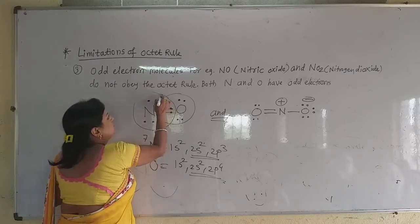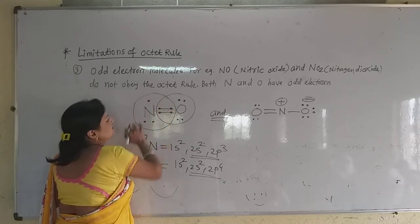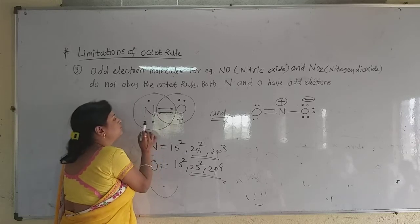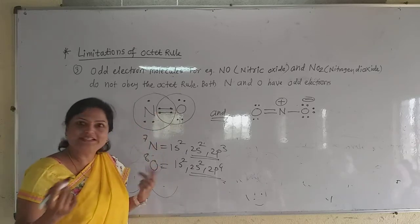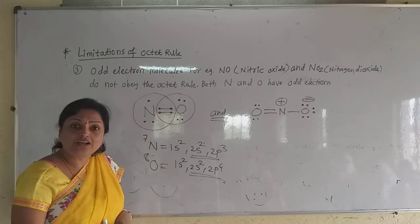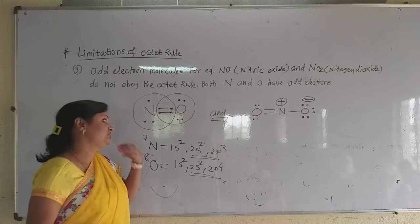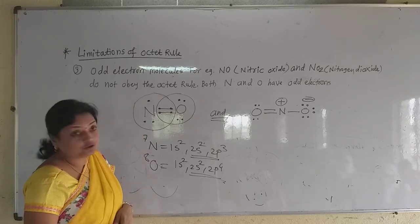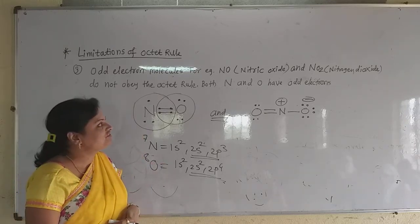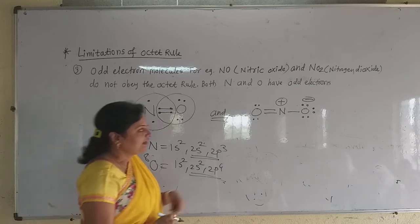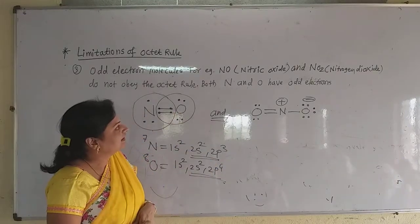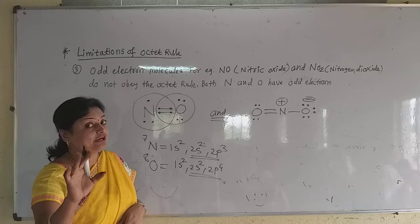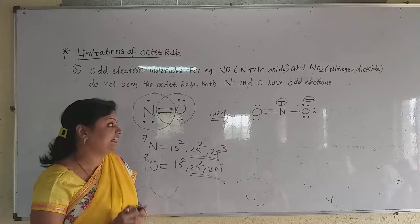But what about the nitrogen? In this case, nitrogen has 1, 2, 3, 4, 5, 6 and 7 electrons — that means 7 electrons, not completing the octet. Still this NO — that is the nitric oxide molecule — is stable in nature. Now see another example — nitrogen dioxide. In that, oxygen has odd electrons.